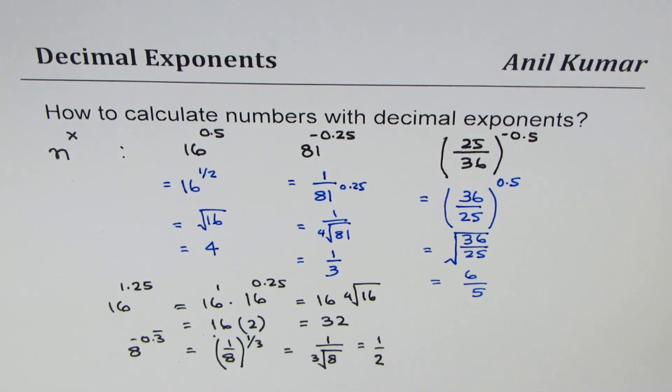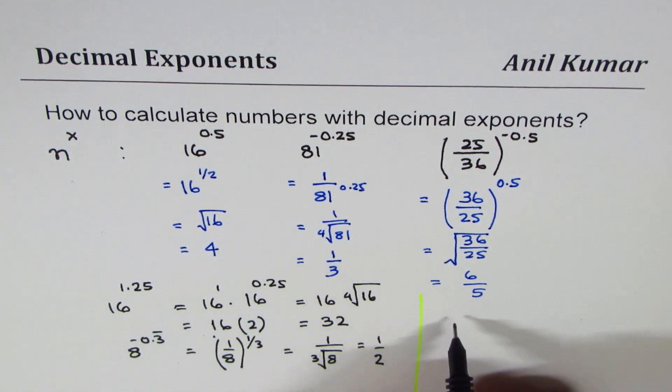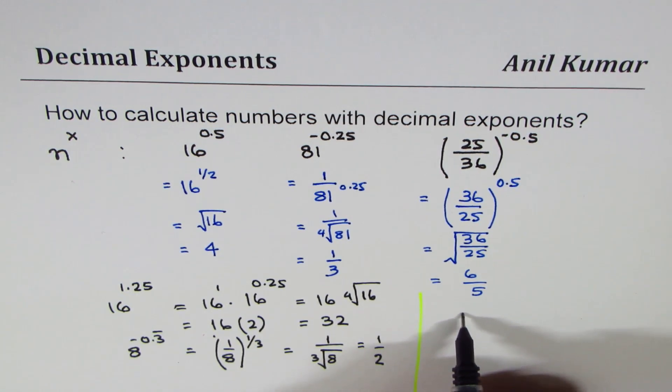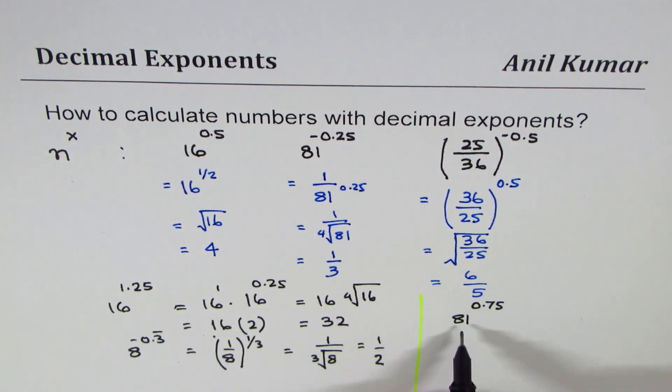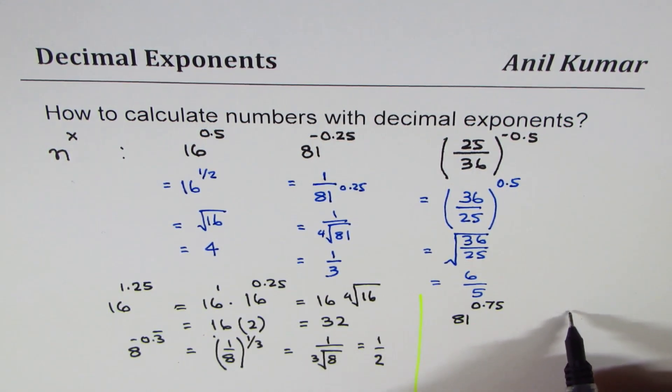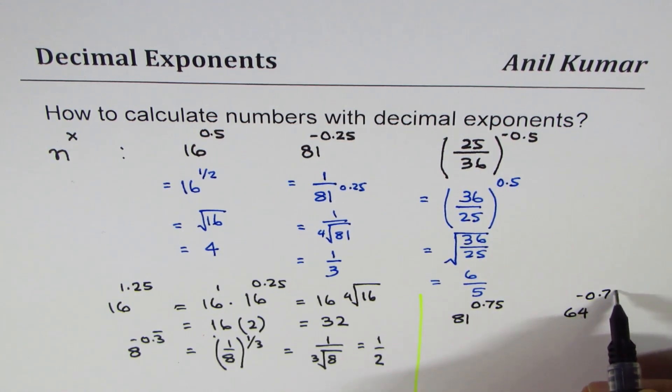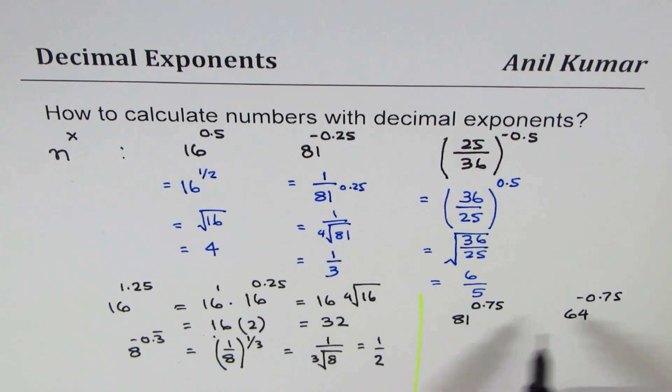So I hope with this variety of examples you are in a good position to calculate numbers with decimal exponents. Let's take some more decimal exponents. Let us have, for example, let's write 81 to the power of 0.75.